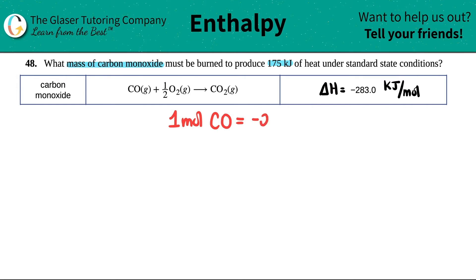So I'm just going to put a negative in here just to say that I know that the energy is being released and not absorbed, but I'm releasing 283 kilojoules. Now we want to know what is the mass of the carbon monoxide in order to produce 175 kilojoules. So it looks like I'm going from kilojoules to mass. I'm converting from one thing to another. Sounds like dimensional analysis to me.